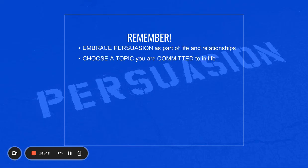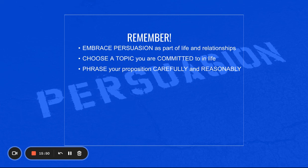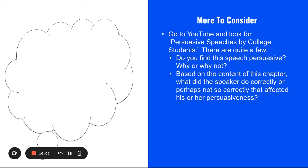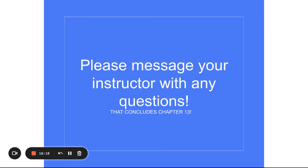To summarize: embrace persuasion as a part of life and relationships. Choose a topic you are committed to, phrase your proposition carefully and reasonably, and include ethos, logos, and pathos — all available means of persuasion by Aristotle — in your speech. Use new, cited, credible evidence. To practice, go to YouTube and look up persuasive speeches by college students, evaluate what the speaker did correctly and what they need to work on. I look forward to hearing the topics you're passionate about and the persuasive speeches you present this semester.